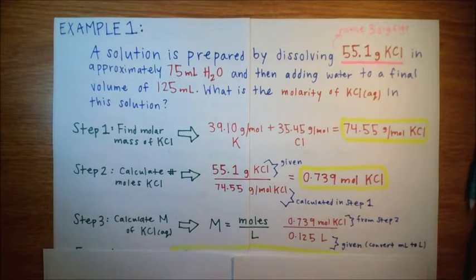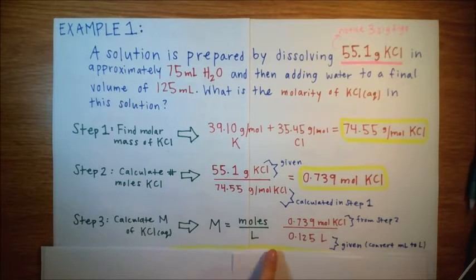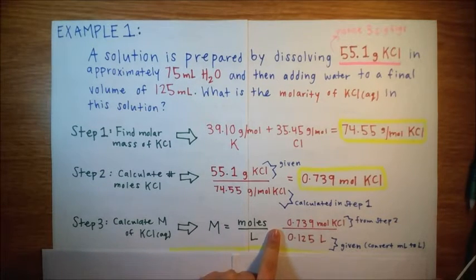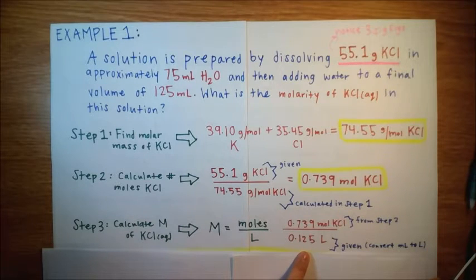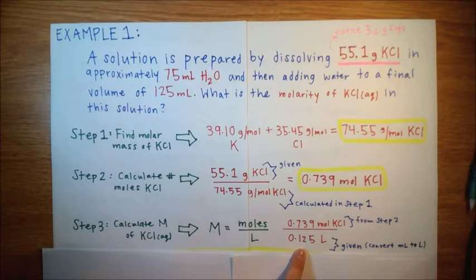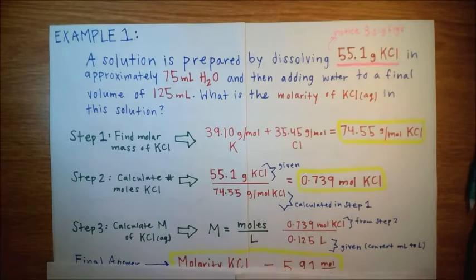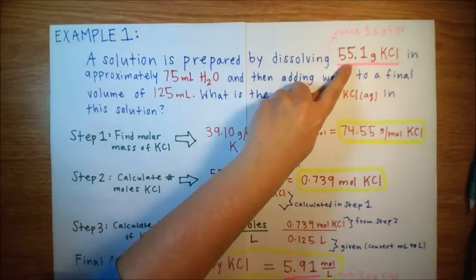So to calculate molarity, again, let's look back at our equation, molarity is equal to moles per liter. So we just calculated that there are 0.739 moles of potassium chloride. And the problem tells us that there are 125 milliliters. It's just 10 to the negative third. So we have 0.125 liters. This is given. So dividing moles per liters, we end up with a final answer, a molarity of potassium chloride equal to 5.91 moles per liters. And again, notice that we have our answer here in three significant figures to match what was given in the question.